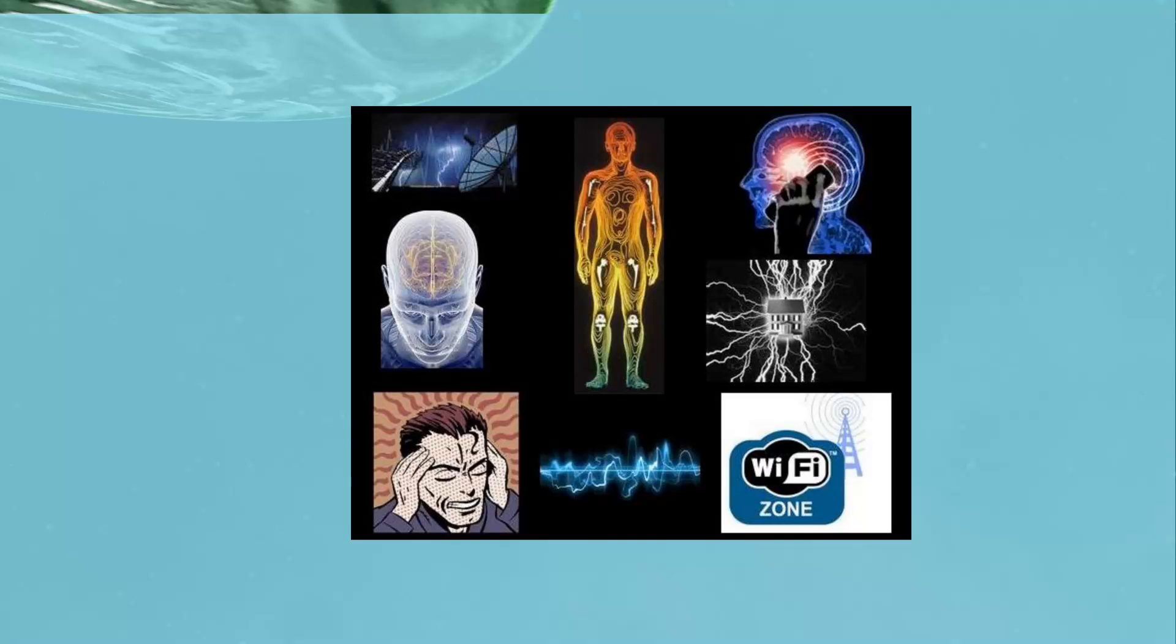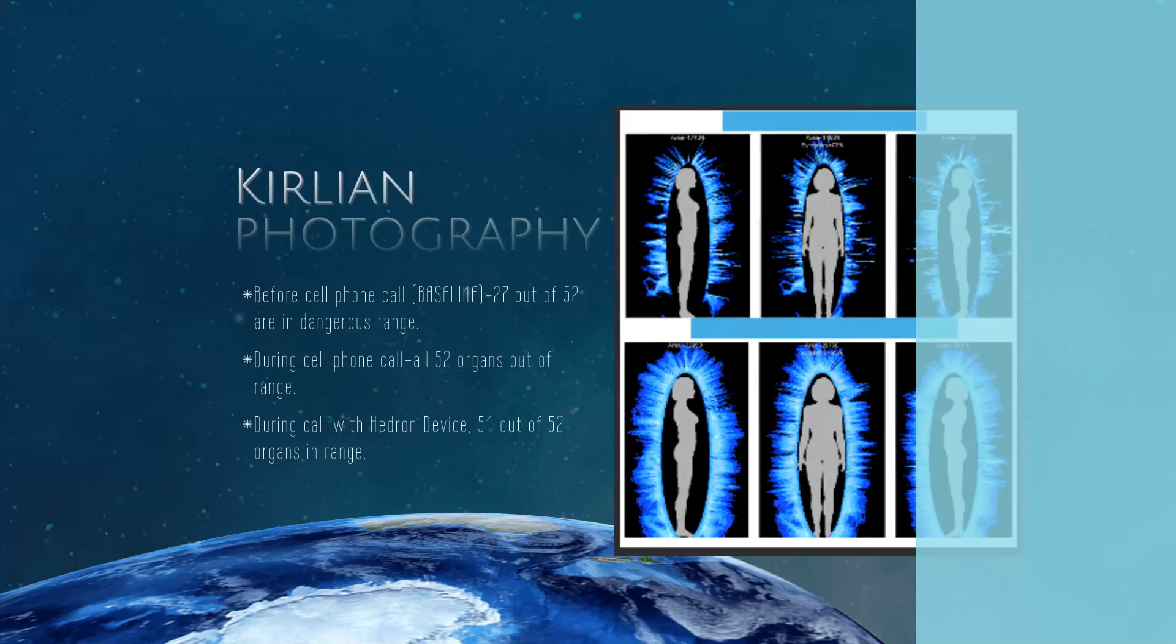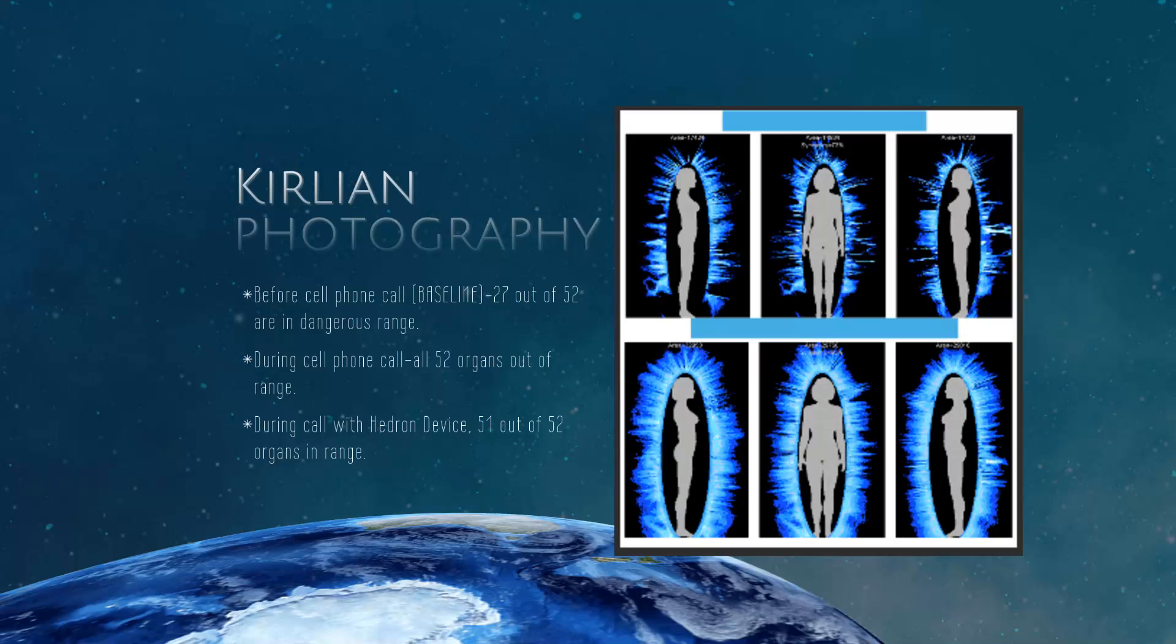So let's take a look at one of our particular cases in the Karelian photography. We measured a subject before a cell phone call. At the baseline, we had 27 organs out of 52 that were in the dangerous zone. Now we had the same subject make a cell phone call, and during the cell phone call, all 52 organs were out of range. The next step was to put the hedron cell phone harmonizer on the cell phone, then have the subject make the call. Now look at what happened.